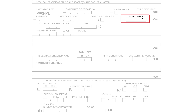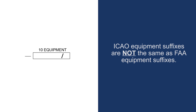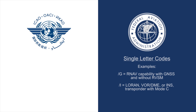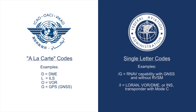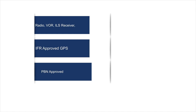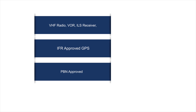The ICAO codes used to denote the type of equipment on board the aircraft are different than the codes used by the FAA. Where the FAA established a single letter to determine entire avionics packages, the ICAO system lets you pick and choose which equipment you have and the capabilities of your avionics. For example, if you have a standard avionics package including a standard VHF radio, a VOR, and an ILS receiver, you would start your equipment line with the letter S. If you also had an IFR-approved GPS on board, you would add the letter G. If you are able to accept PBN routes and procedures, you would add the letter R.